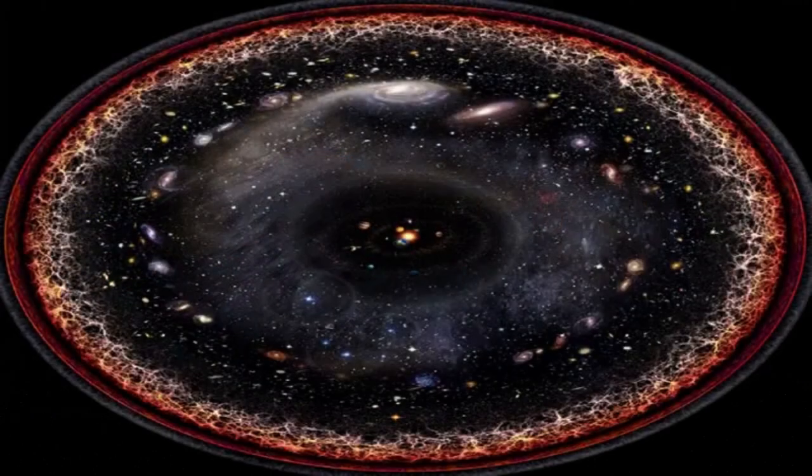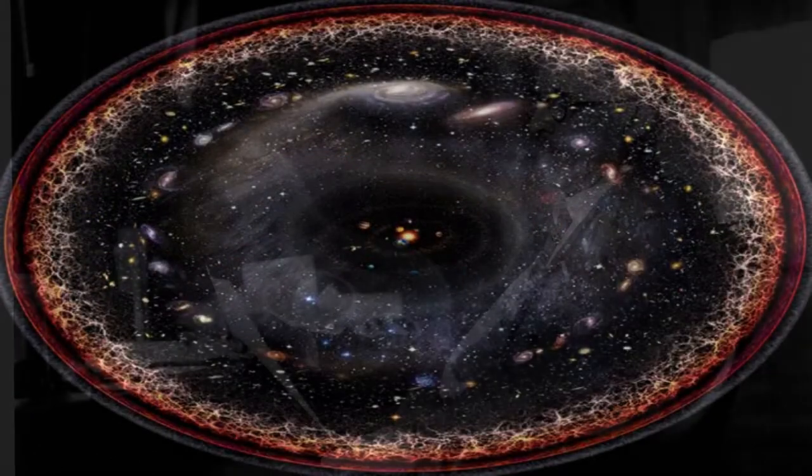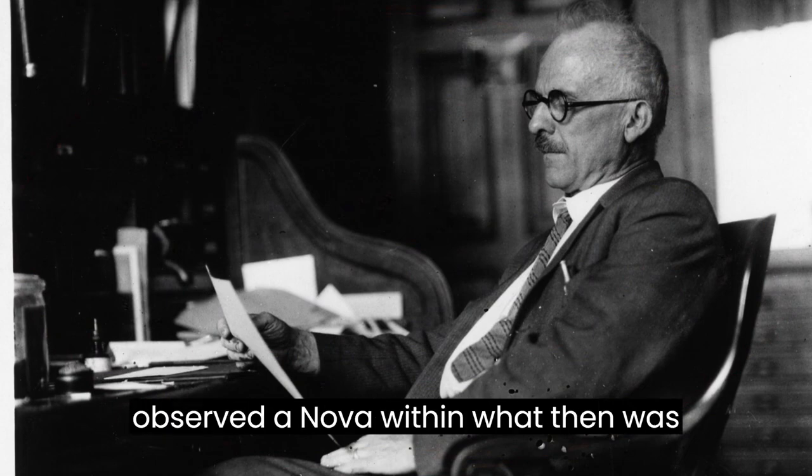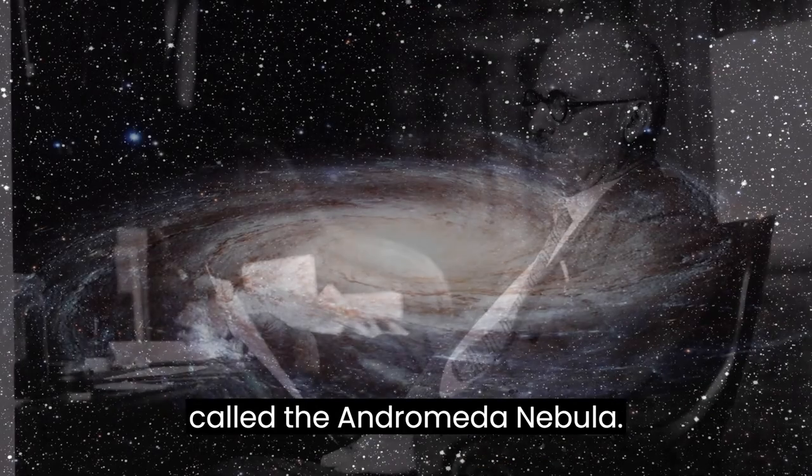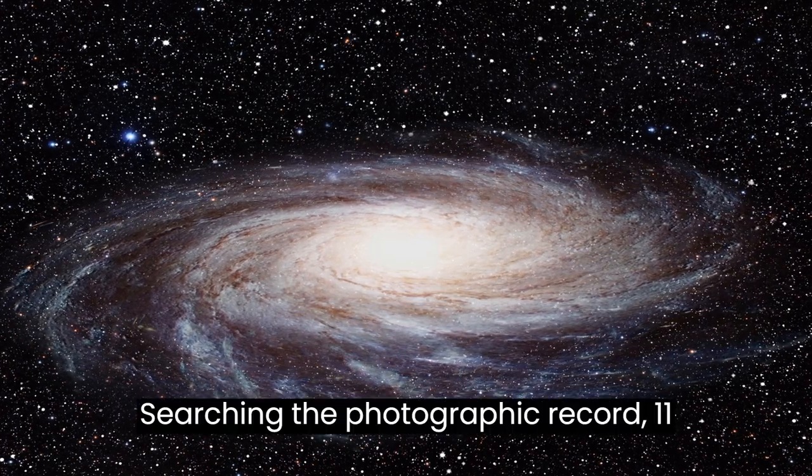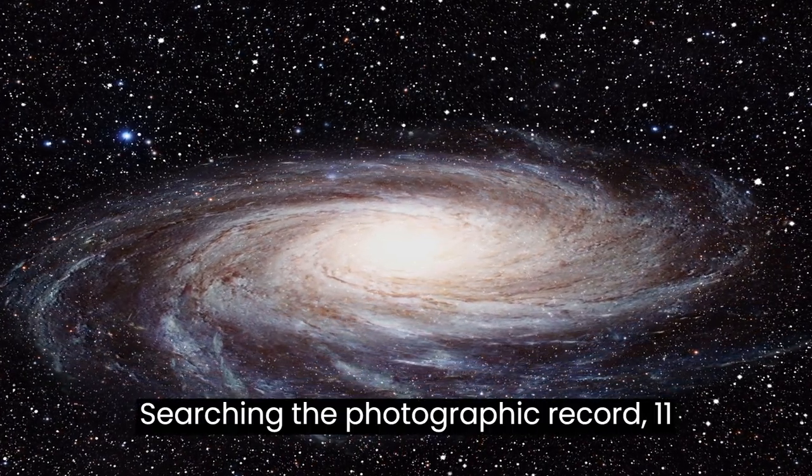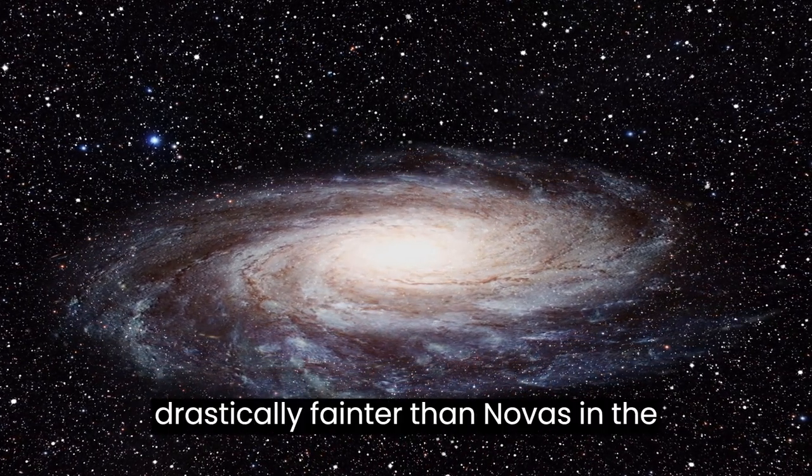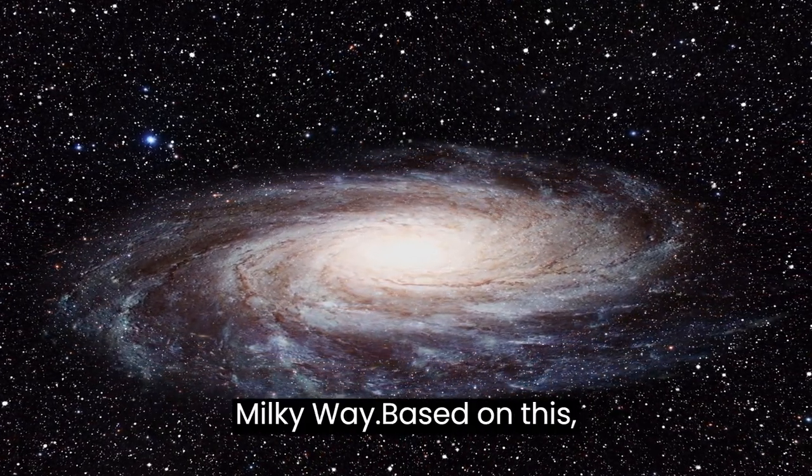The non-existence of a center of the universe. In 1917, Heber-Doust Curtis observed a nova within what was then called the Andromeda Nebula. Searching the photographic record, 11 more novae were discovered. Curtis noticed that novas in Andromeda were drastically fainter than novas in the Milky Way.